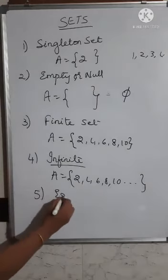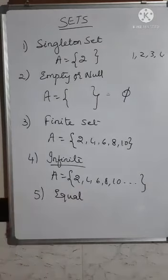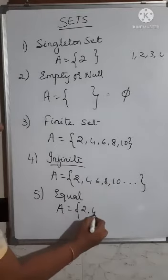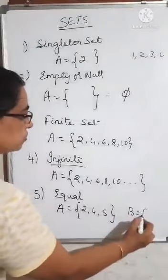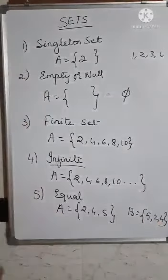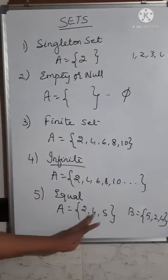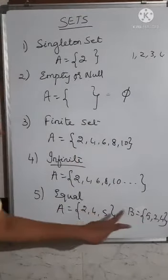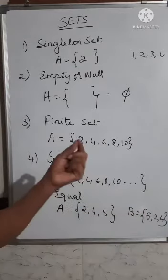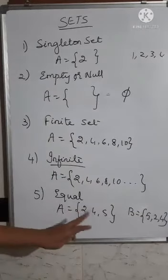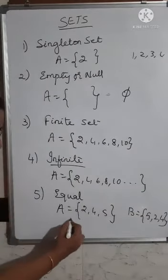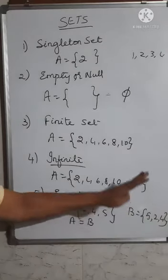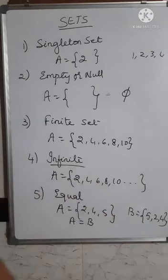Then you have equal sets. Two sets are said to be equal — you need two sets for comparison. For example, A = {2, 4, 5} and B = {5, 2, 4}. The number of elements: 1, 2, 3 in both. The elements 2, 4, 5 are the same in both sets. If you have the same number of elements and the same elements present, the order can change, but such sets are called equal sets, and you write A = B.